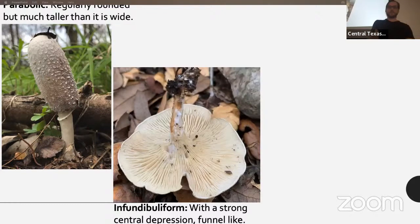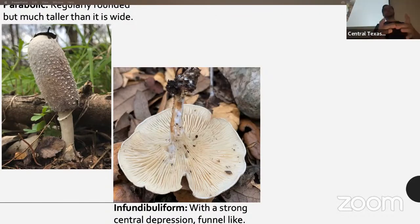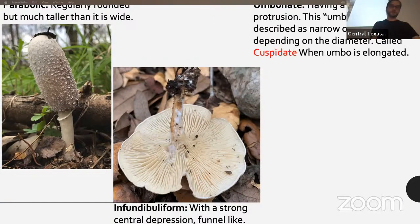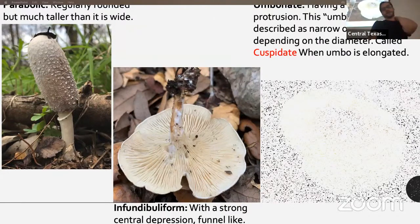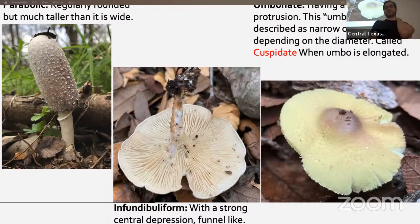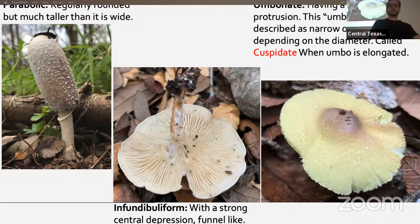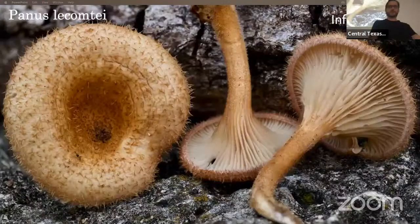Infundibuliform has a strong central depression or funnel — some mushrooms will have a slight depression but this type looks like it goes straight down into the stipe. The cap can be umbonate, having a central bump or protrusion. The umbo can also be described as broad or narrow, and it's called cuspidate when it's really elongated and kind of pointy, which you see on some Lactarius and Melanoleuca.